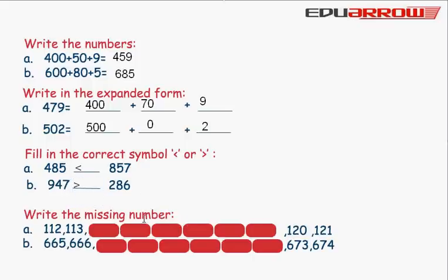Write the missing number: 112, 113. Here we can see 120, 121. So this is simple counting. We write here 114, 115, 116, 117.